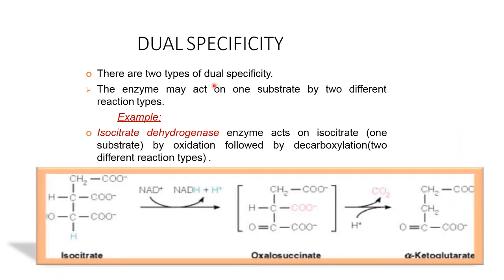There are two types of dual specificity. First, the enzyme may act on one substrate by two different reaction types. For example, isocitrate dehydrogenase acts on isocitrate — one substrate — by oxidation followed by decarboxylation, which are two different reaction types.